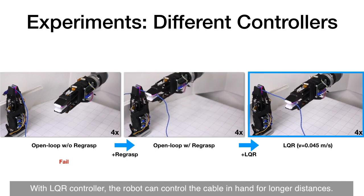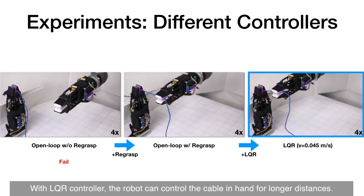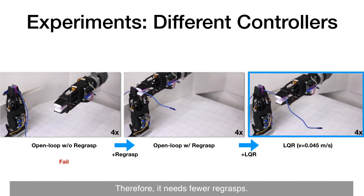With LQR controller, the robot can control the cable in hand for longer distances. Therefore, it needs few re-grasps.